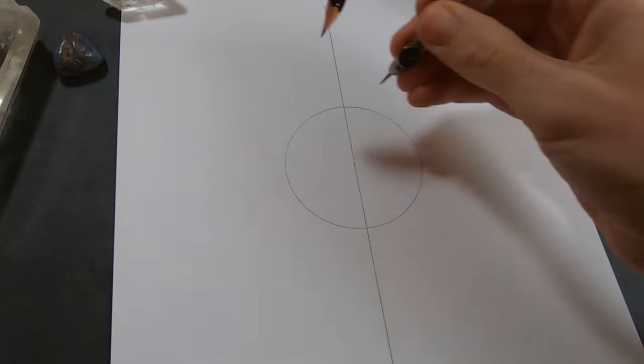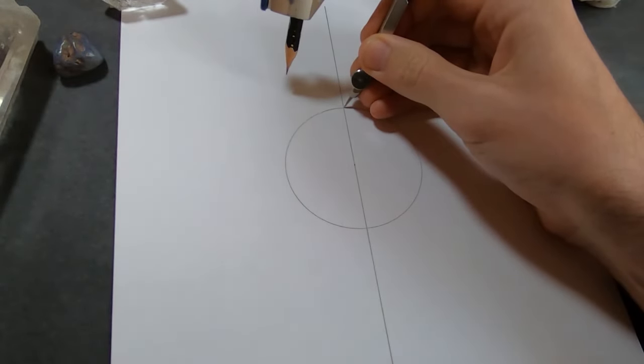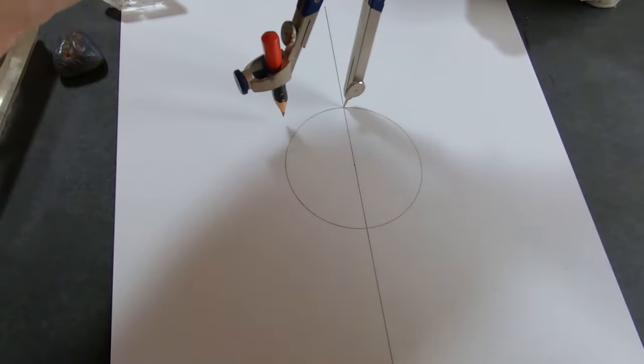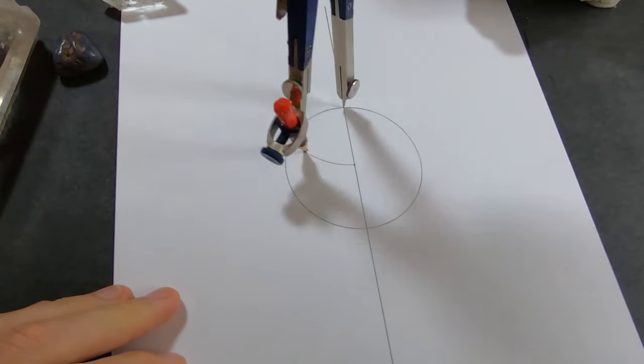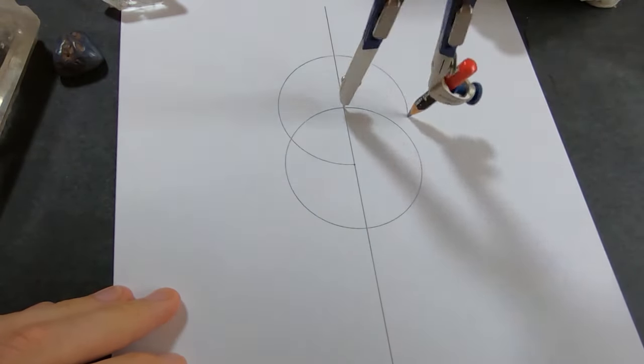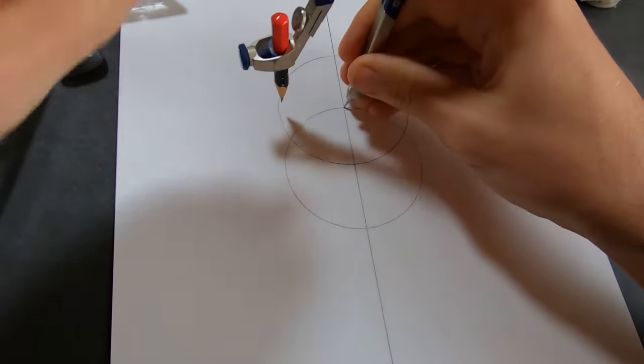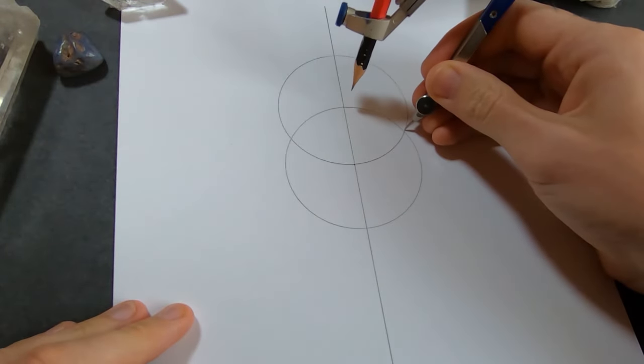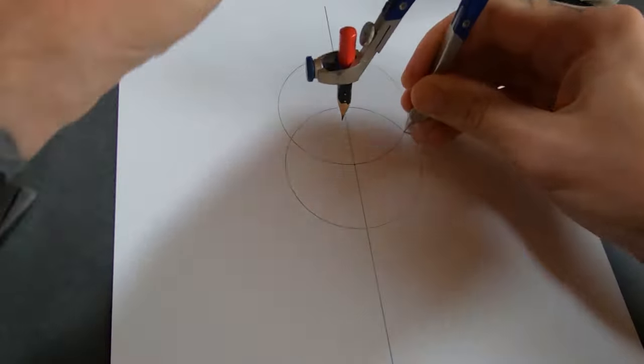Then I'm going to put the point on this intersection where the line crosses the circle and I'm going to draw another circle the exact same size. Then I'm going to work my way around by moving the compass point to each point where the circles cross.